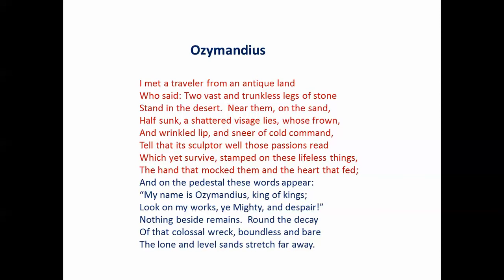There are two reasons we might reasonably assume that. First, the Middle East is the cradle of human civilization — the oldest civilizations we know about developed there. It is an antique land. Second, there are lots of deserts in the Middle East, and what this traveler describes is in a desert. If we do some biographical investigation, we would learn that the poet Shelley was thinking about Egypt. So the traveler tells the poet that he saw a massive, collapsed structure. Only two pieces were standing: two vast and trunkless legs of stone. On the ground, there were broken remnants of this statue.